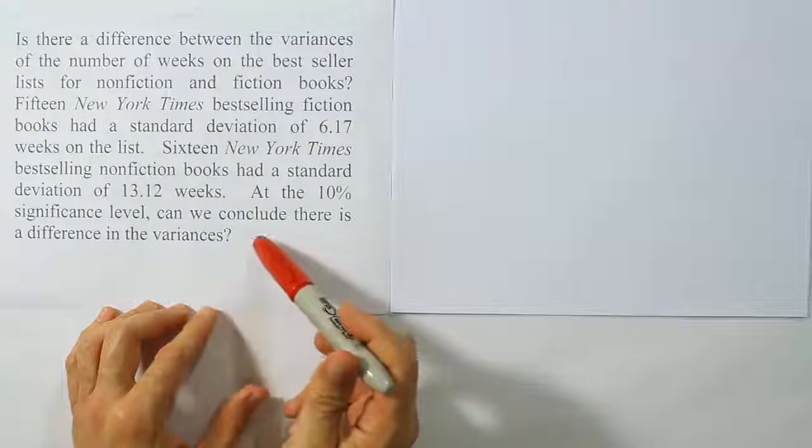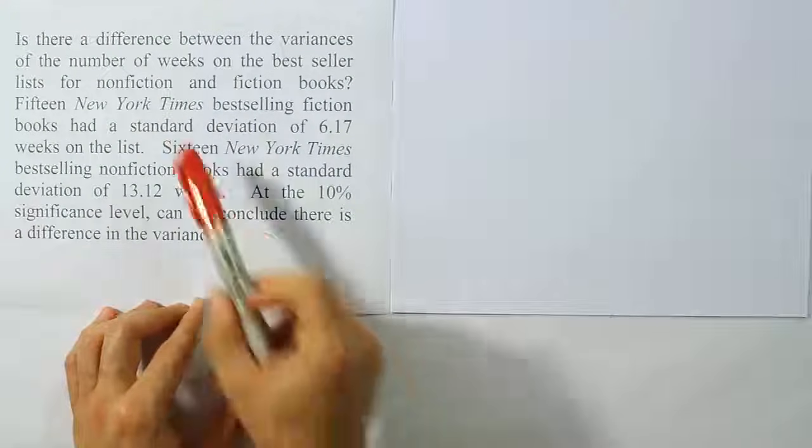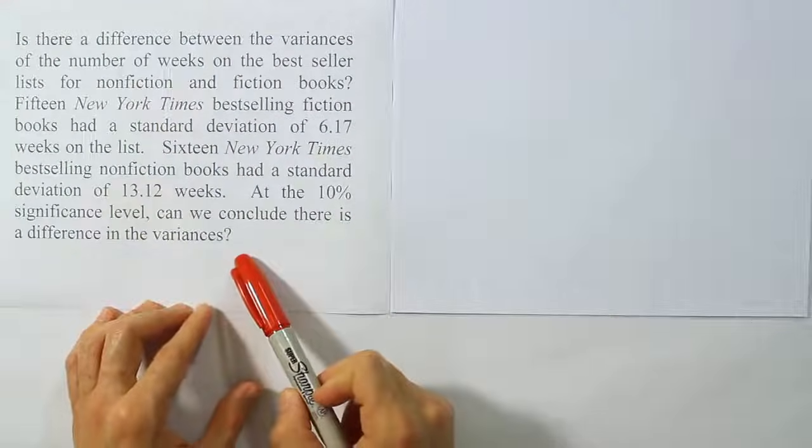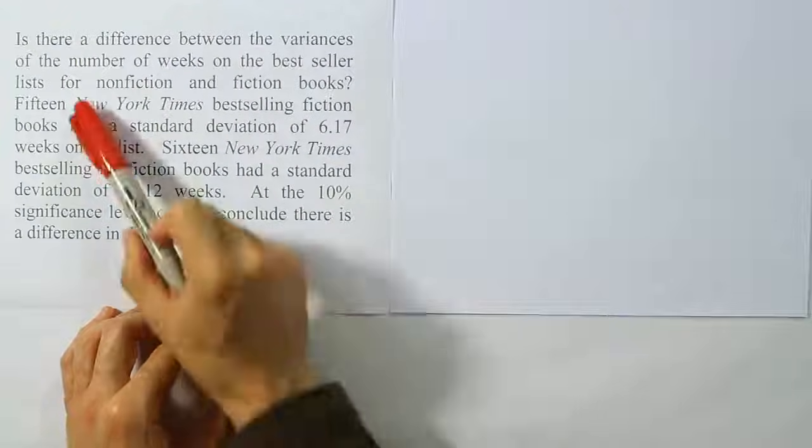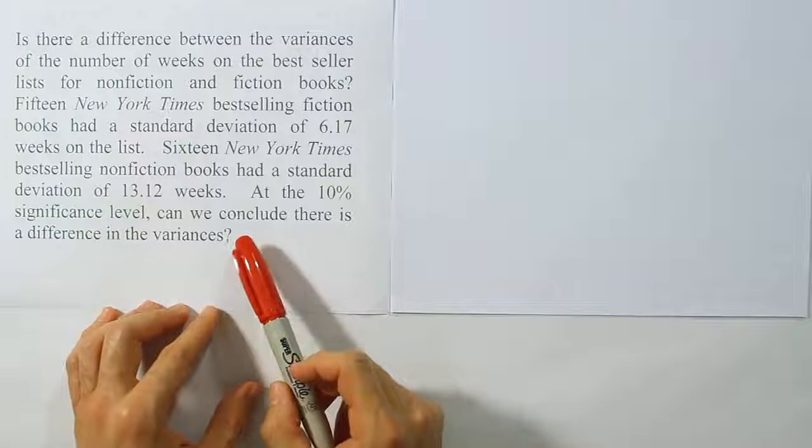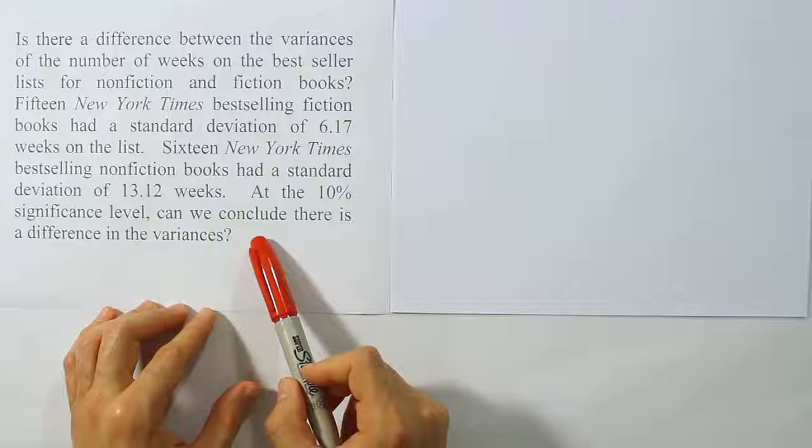At this moment, I would be concerned that we aren't meeting the requirements of this procedure. The procedure requires that the populations we draw the samples from are normal distributions, and with these small sample sizes, we couldn't certainly verify that. Those are too small to be sure those are normally distributed. It would be hard for us to show that, and this test is actually pretty sensitive to that.